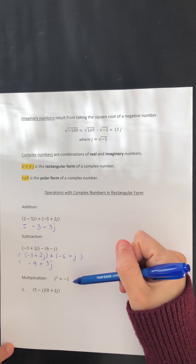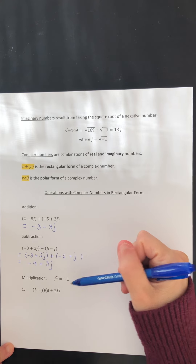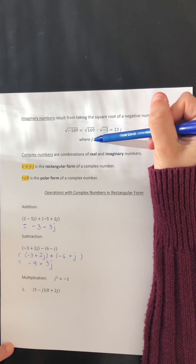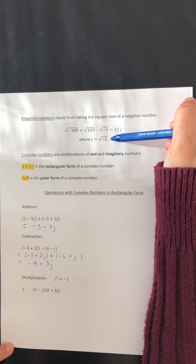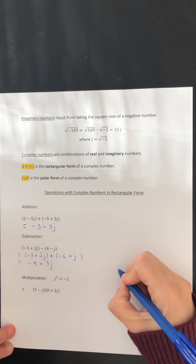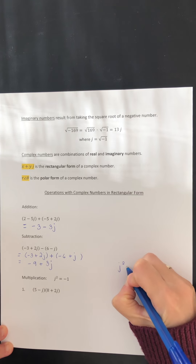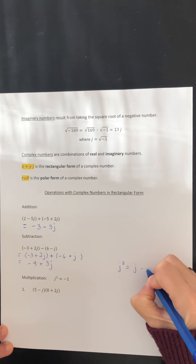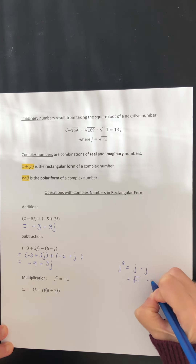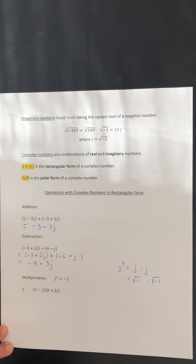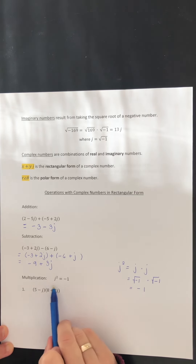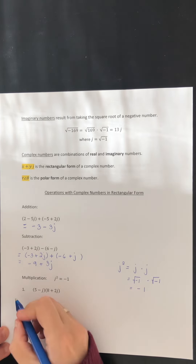The next operation we will look at is multiplication. In order to handle multiplication, we need to know what j squared equals. Remember, j is the square root of negative 1, which means j squared is j times j. It is also the square root of negative 1 multiplied by the square root of negative 1, and that is simply negative 1. So we need to know that j squared equals negative 1 when performing multiplication.